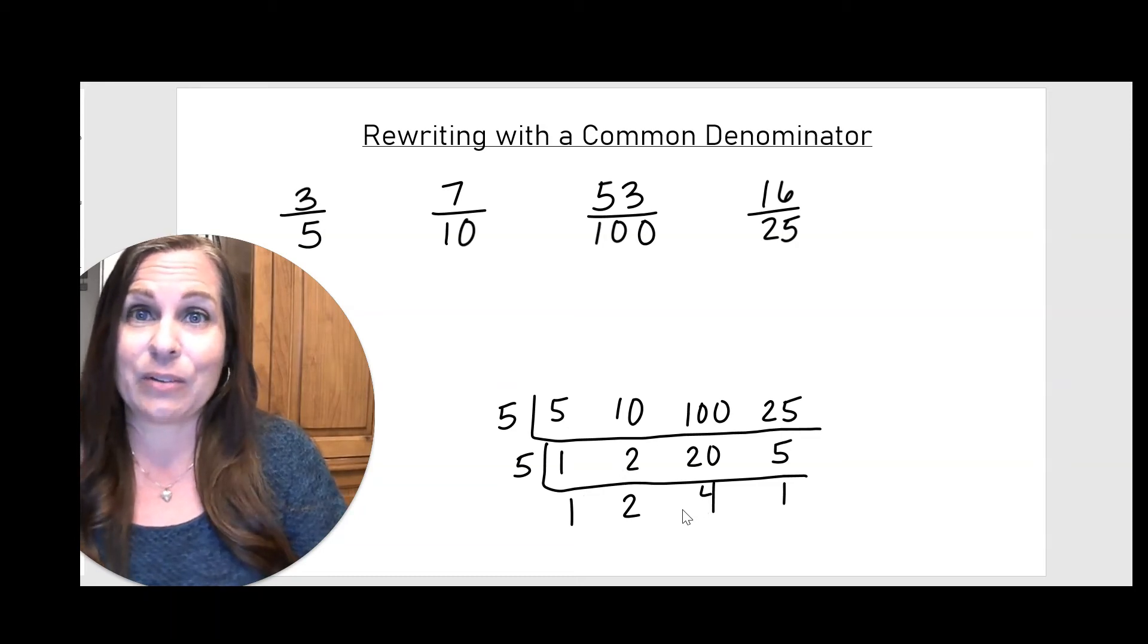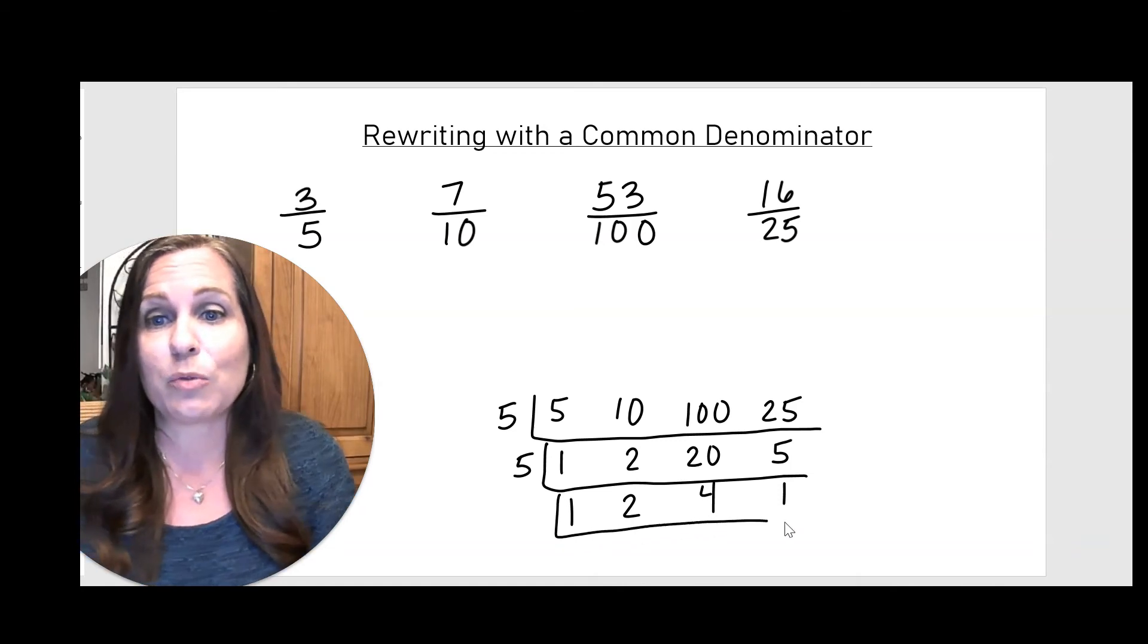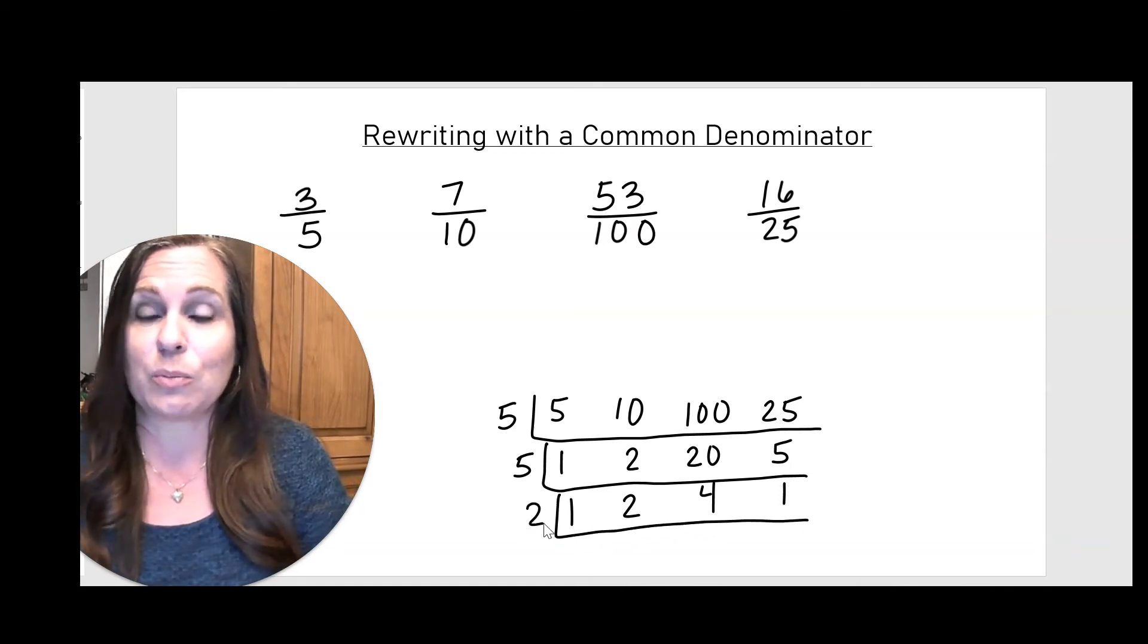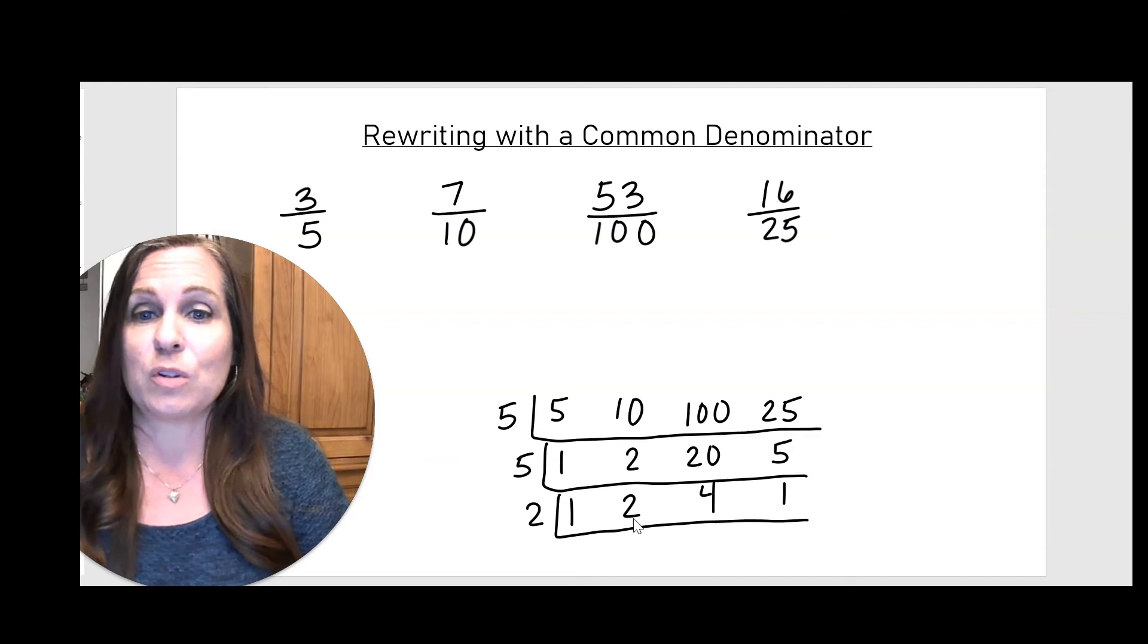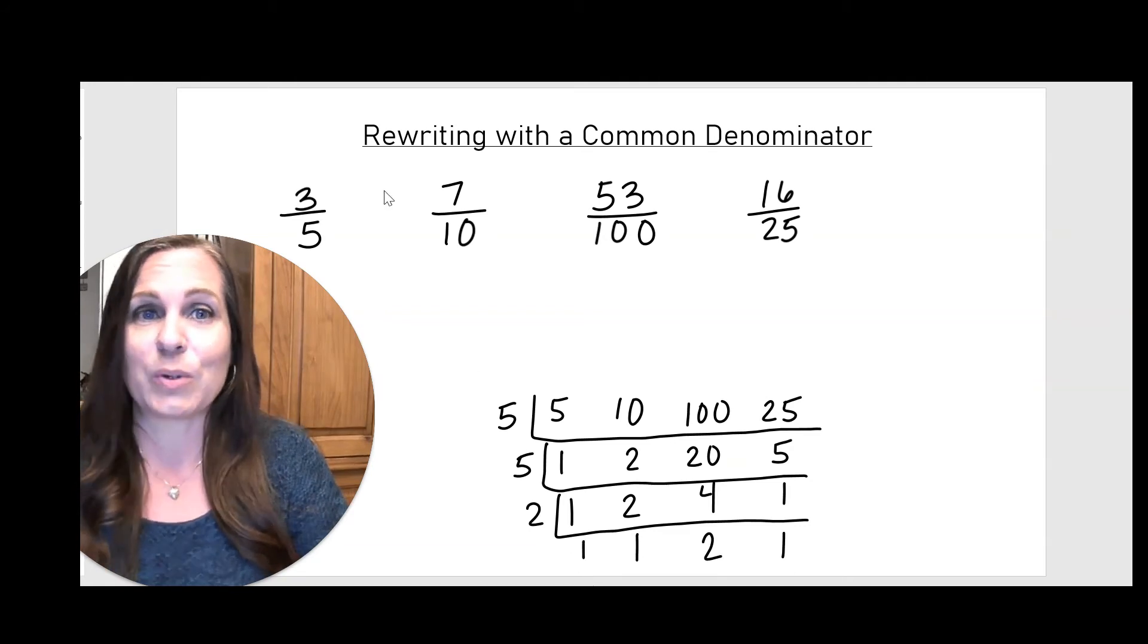And then I can do a similar process here on this last row because 2 and 4 are both divisible by 2. So 2 divided by 2 is 1, 4 divided by 2 is 2. And I didn't divide the 1s, so I'll just bring those down.